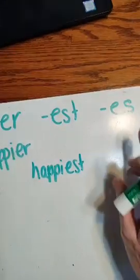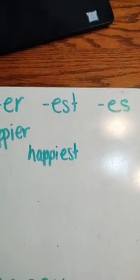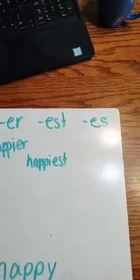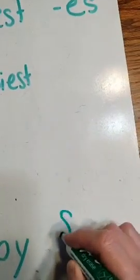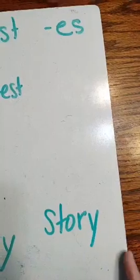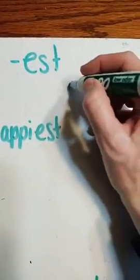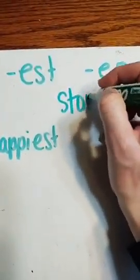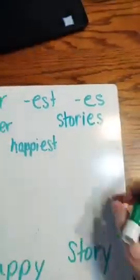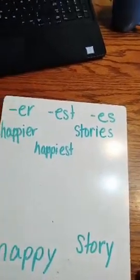This doesn't work for this, because there's no such thing as happies. So let's try a different word that might work — like story. We needed a noun. Story. So let's make it stories. We drop the Y, change it to an I, add ES. Stories — like the sight word we did on the other side.